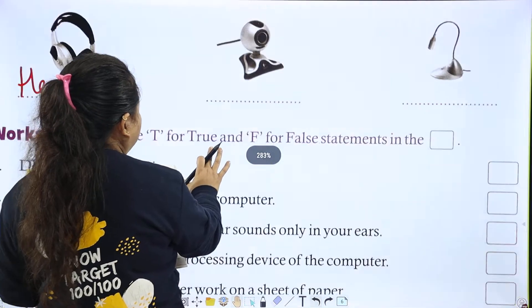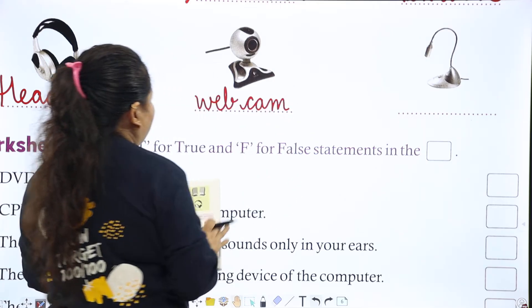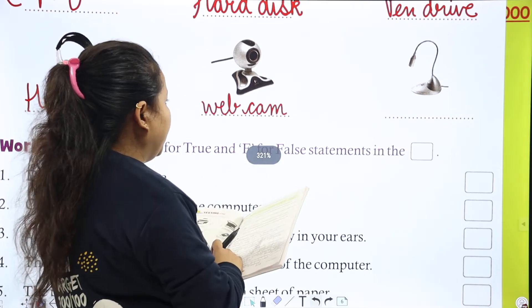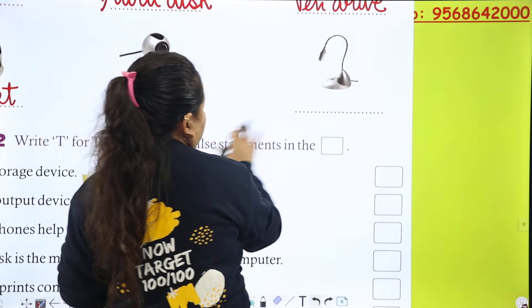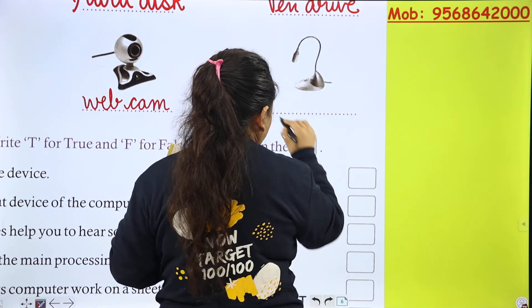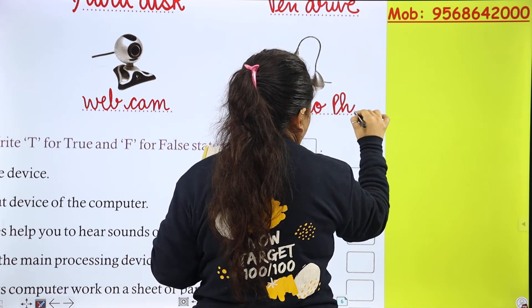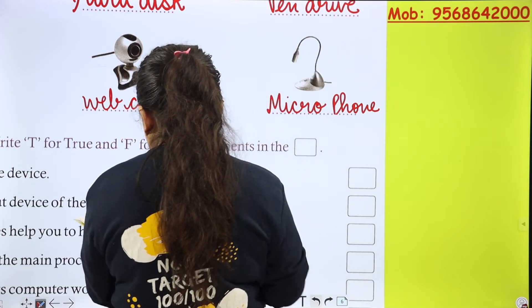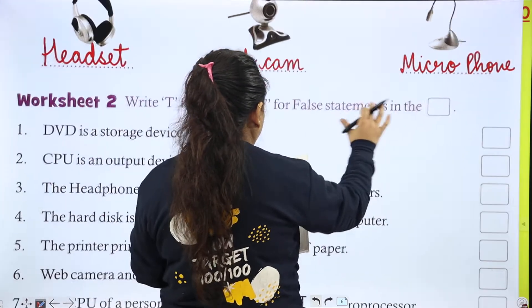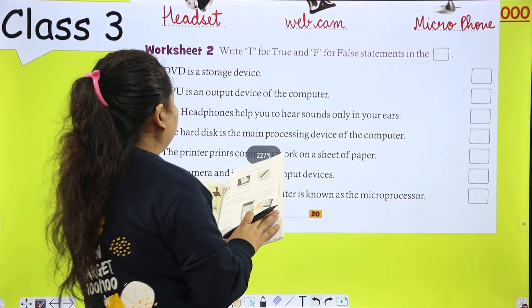Next is webcam. Webcam is an input device. Next is microphone. The microphone is an input device that helps us to input sound into the computer.